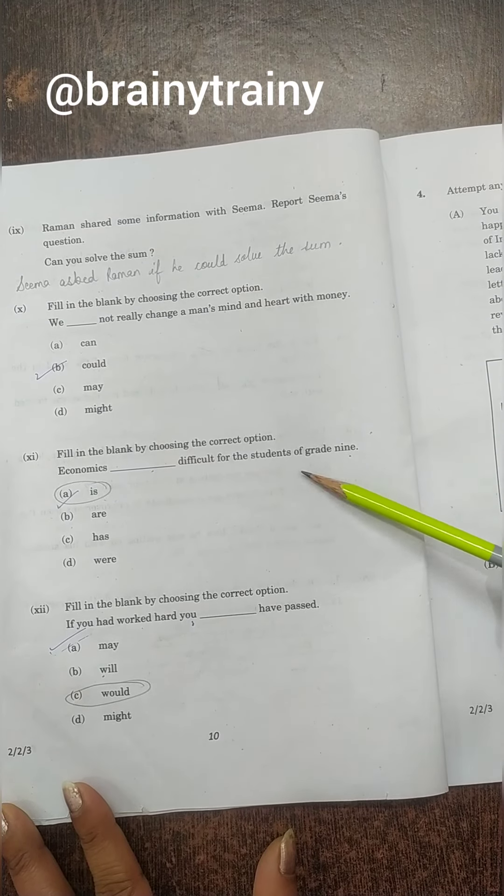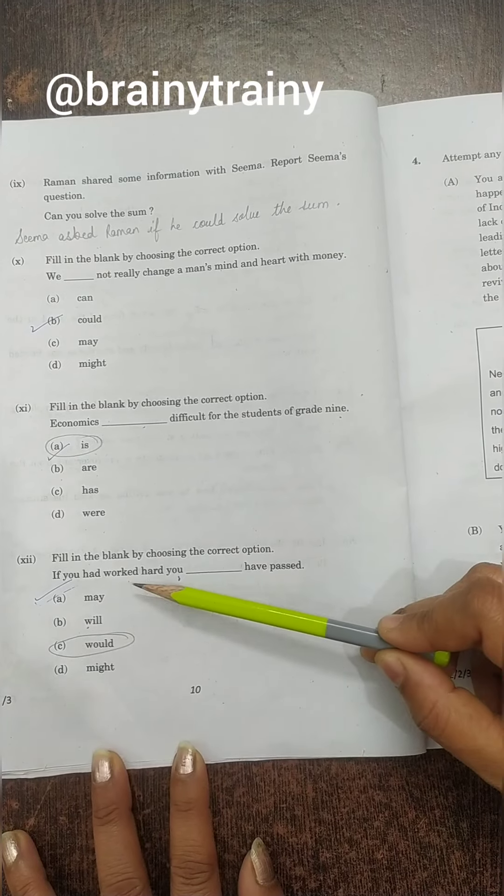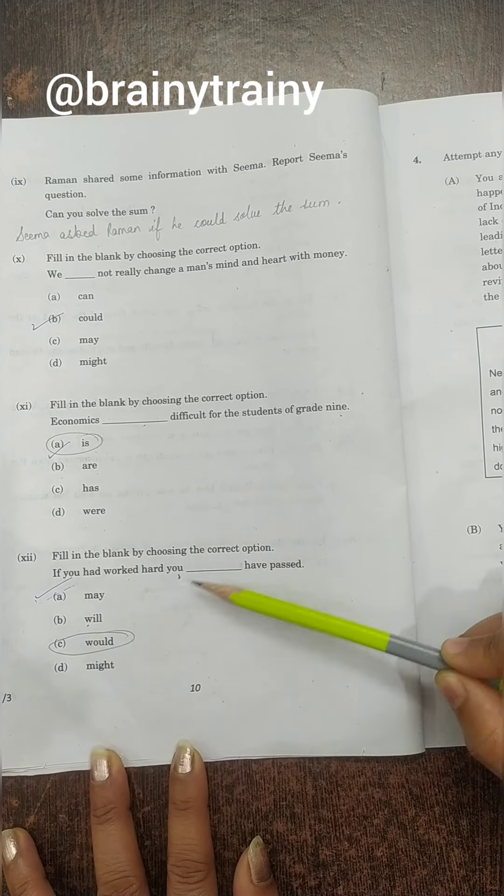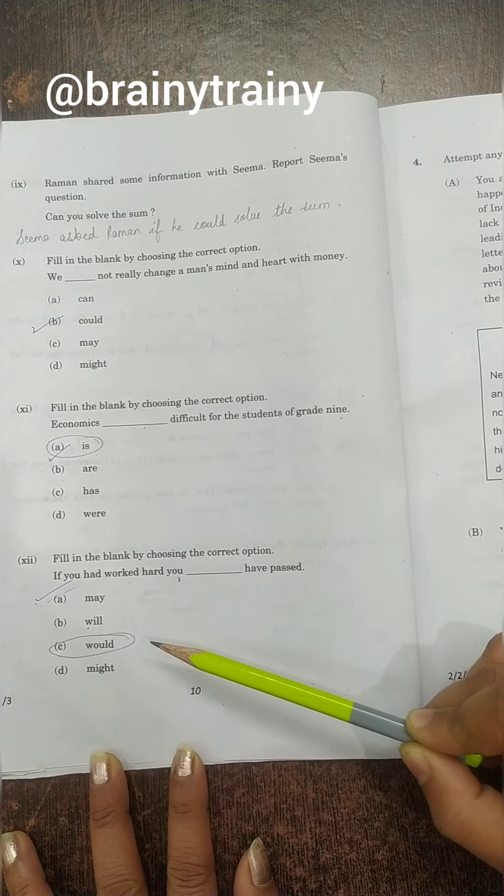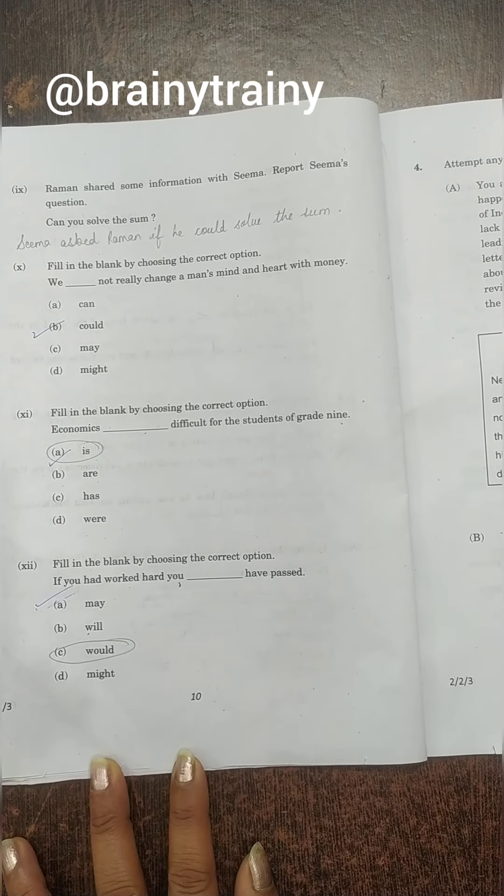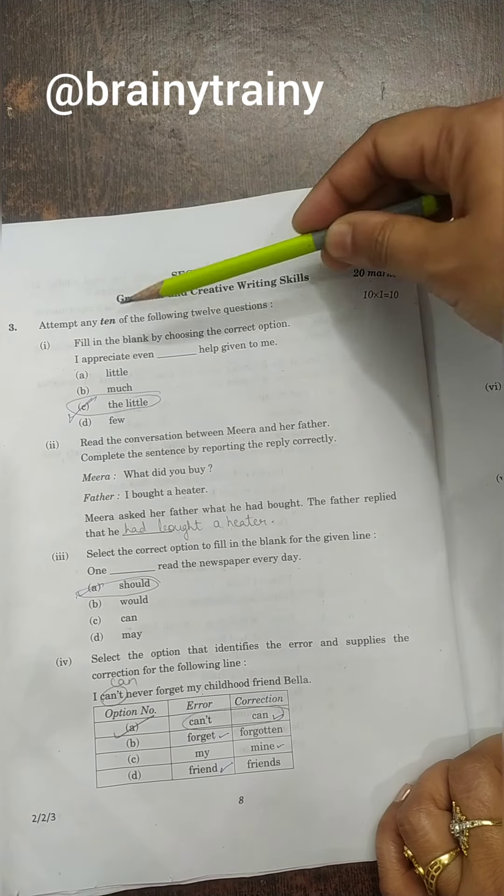Next, economics dash difficult for the students of grade 9. So economics is difficult, this answer will be 'is'. Next: If you had worked hard, you dash have passed. So this answer will be 'would have'. You would have passed. So these are 12 questions in grammar for Class 10 students in which you have to do any 10.